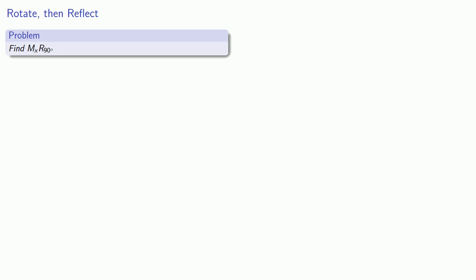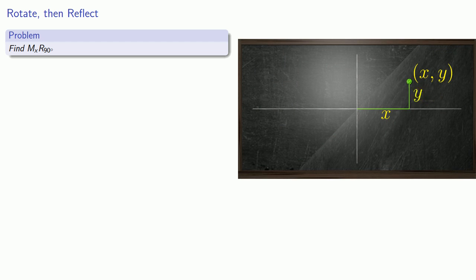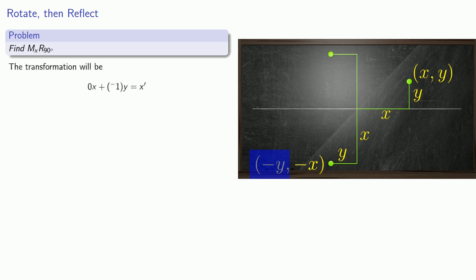Now for Mx∘R90 degrees — that's rotating 90 degrees counter-clockwise around the origin first, and then reflecting across the x-axis. We have our point (x, y) with horizontal distance x and vertical distance y. After rotating 90 degrees counter-clockwise and then reflecting across the x-axis, we go down a vertical distance of x and left a horizontal distance of y, so the coordinates of the point are (negative y, negative x). Our new x-coordinate is negative y, written as 0x plus negative 1y, and our new y-coordinate is negative x, written as negative 1x plus 0y. We record the coefficients to get our transformation matrix.